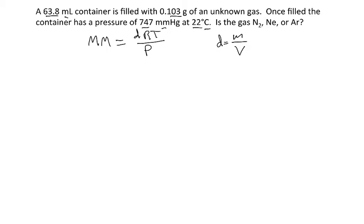So let's do the volume first. So I've got 63.8 milliliters. 1 mL is 10 to the minus 3 liters. So my volume comes out to be 0.0638 liters.